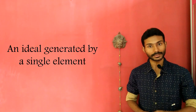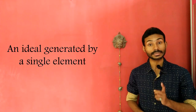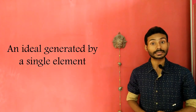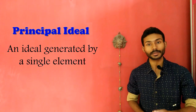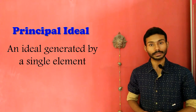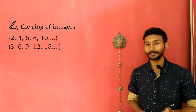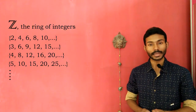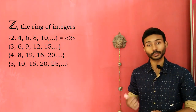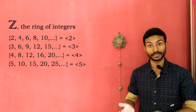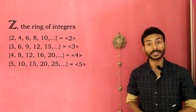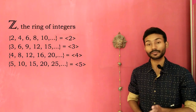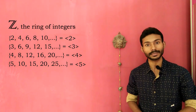If an ideal of a ring R is generated by a single element, then the ideal is said to be a principal ideal. For example, in the ring of all integers, the ideals containing the multiples of 2, 3, 4, 5, and so on are generated by the single elements 2, 3, 4, 5, and so on respectively. So all these different ideals of Z are principal ideals.